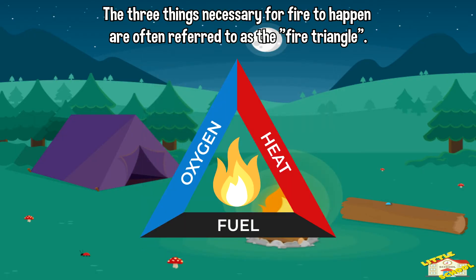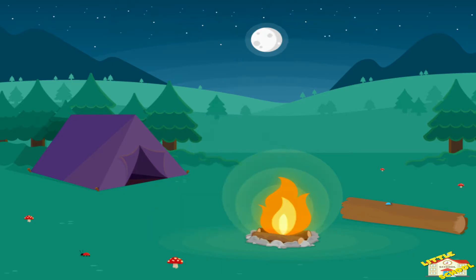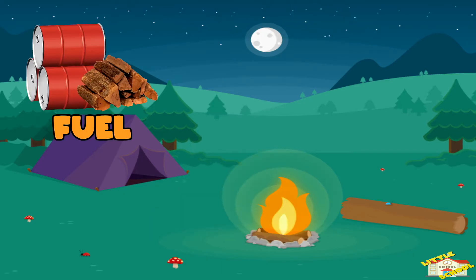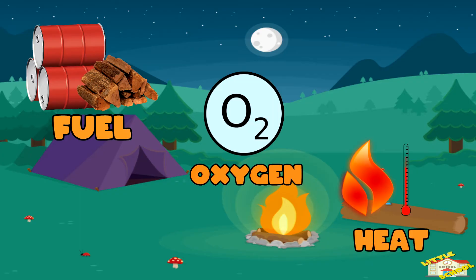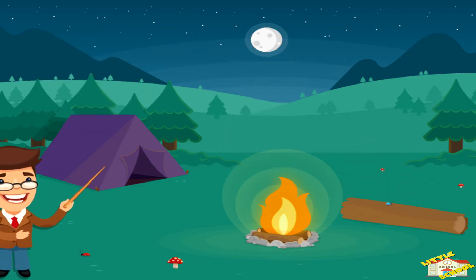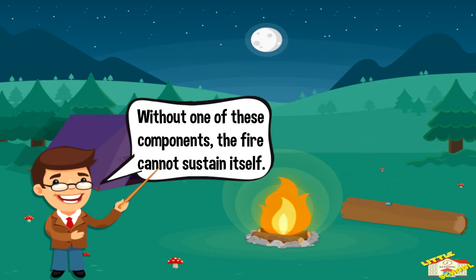The three things necessary for fire to happen are often referred to as the fire triangle. These are fuel, oxygen, and heat. Without one of these components, the fire cannot sustain itself.